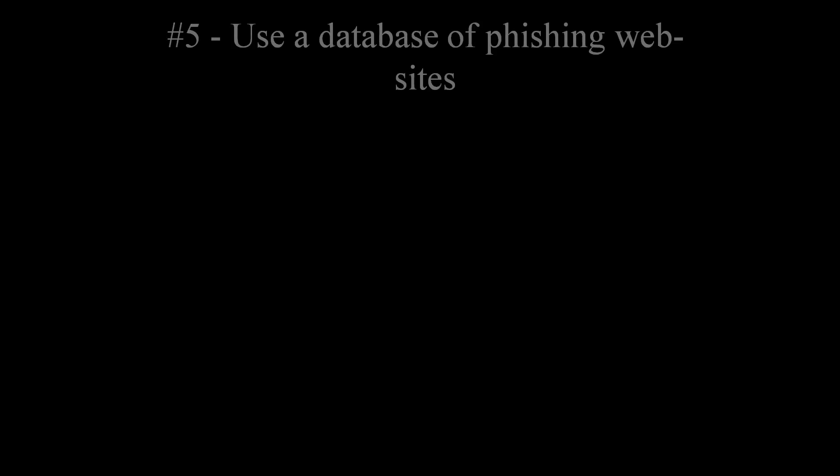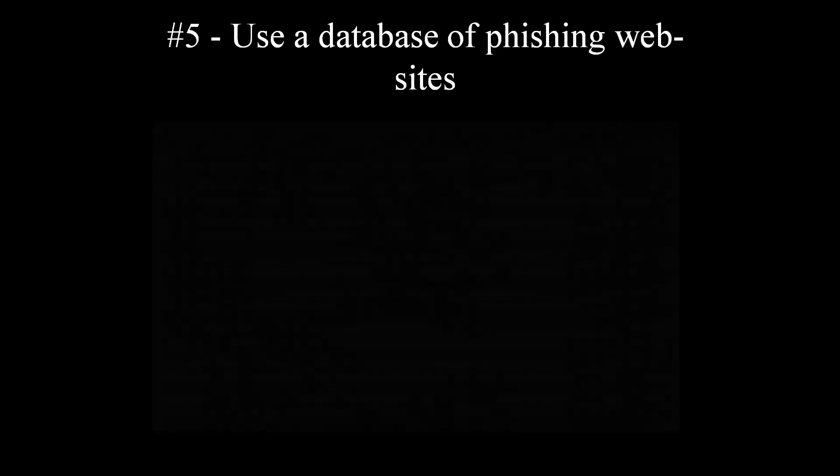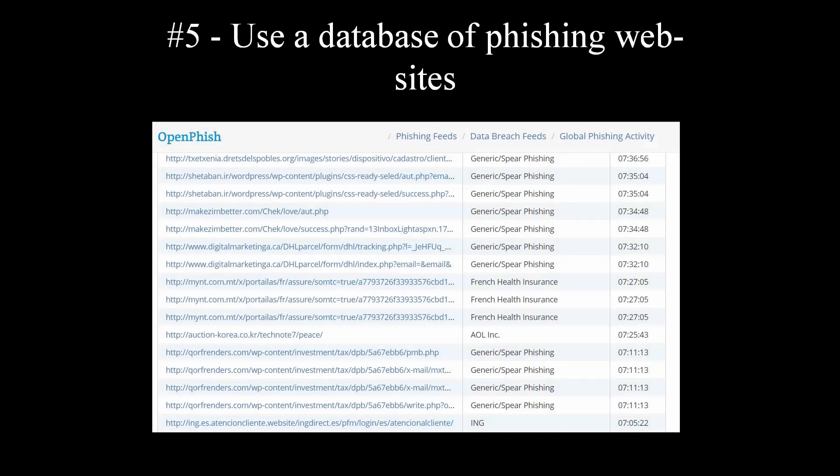Method number 5. Use a database of phishing websites to test your antivirus protection against phishing attacks. The two most popular phishing database websites are PhishTank and OpenPhish. Check the description of this video for exact URLs.